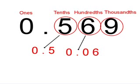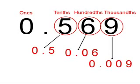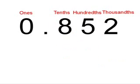The 9 is in the thousandths column. The 9 is actually 0.009. Therefore, the 9 is smaller than 1.